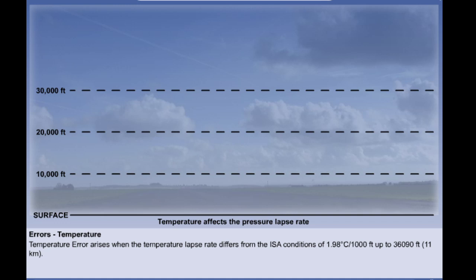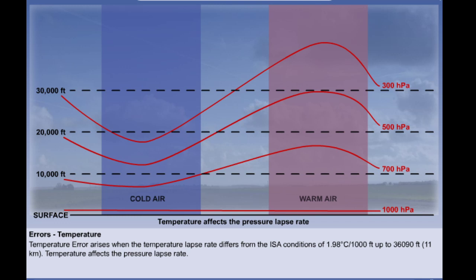Let's look diagrammatically at the effect of temperature error on the altimeter reading when flying through air which is varying from ISA conditions. Let's start by drawing lines of constant pressure and equate those pressures with altitude. If we now put an area of warm air on the right and an area of cold air on the left, we can see that the pressure levels expand in the warm air and contract in the cold air. Let's now fly an aircraft from the right to the left at a constant indicated altitude. To achieve this, the pressure sensed by the altimeter must not change — we must follow a pressure level. However in doing so we are following a pressure level which is actually descending, so in reality we are descending also but the altimeter is not showing this. Our true altitude is decreasing but our indicated altitude is constant.